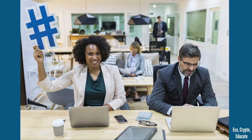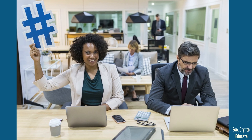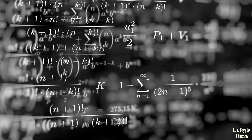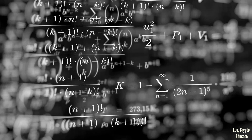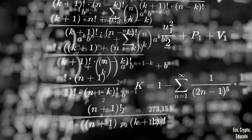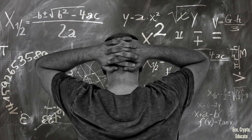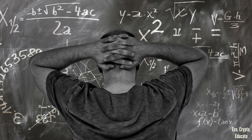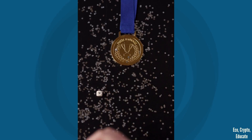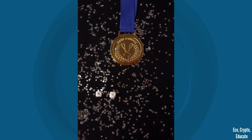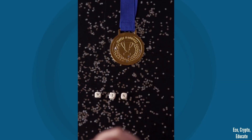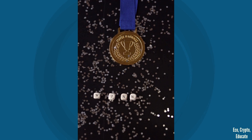Bitcoin uses hash functions to create something called — guess what? — a hash. Every time you want to add a new block to the blockchain, you have to solve a really hard math problem called a proof-of-work using a hash function. This takes a lot of time and a huge amount of energy to solve. And once someone solves the proof-of-work, they can add the new block to the blockchain and earn some new bitcoins as a reward.